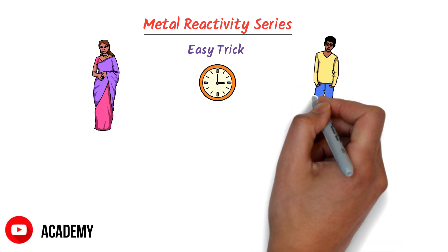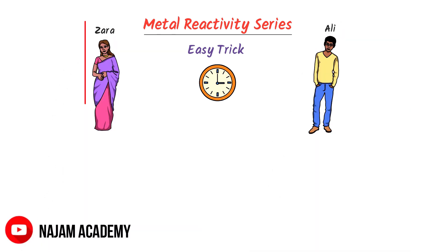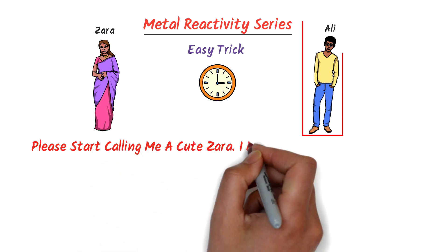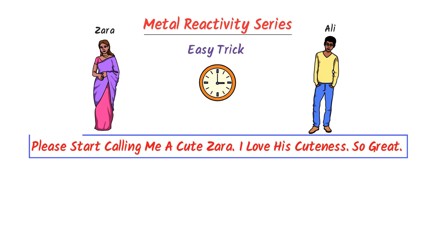Consider two best friends, Zara and Ali. Let Zara request to his friend Ali: Please start calling me a cute Zara. I love his cuteness. So great. Let me repeat it. Please start calling me a cute Zara. I love his cuteness. So great.